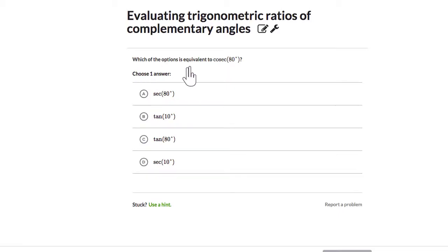Which of these options is equivalent to cosecant 80 degrees? Okay, so I have some options here and one of them is equal to, because it says choose one answer, one of them is equal to this and the rest are not. I have to find which one that is.